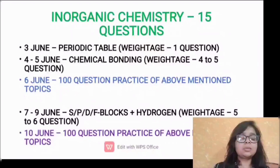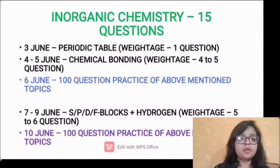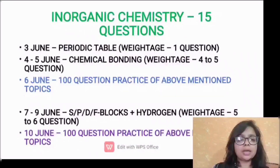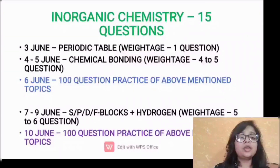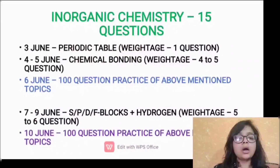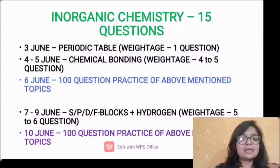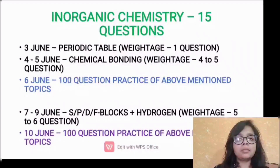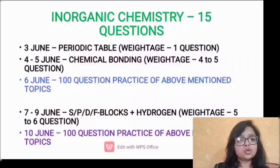Moving further, if we talk about inorganic chemistry, it is 15 questions. You should firstly pick up periodic table and chemical bonding and give three days to read the theory and concepts of these chapters. The weightage is 5 to 6 questions, so you can build your practice and assure a score of 5 to 6 questions by doing these two chapters.